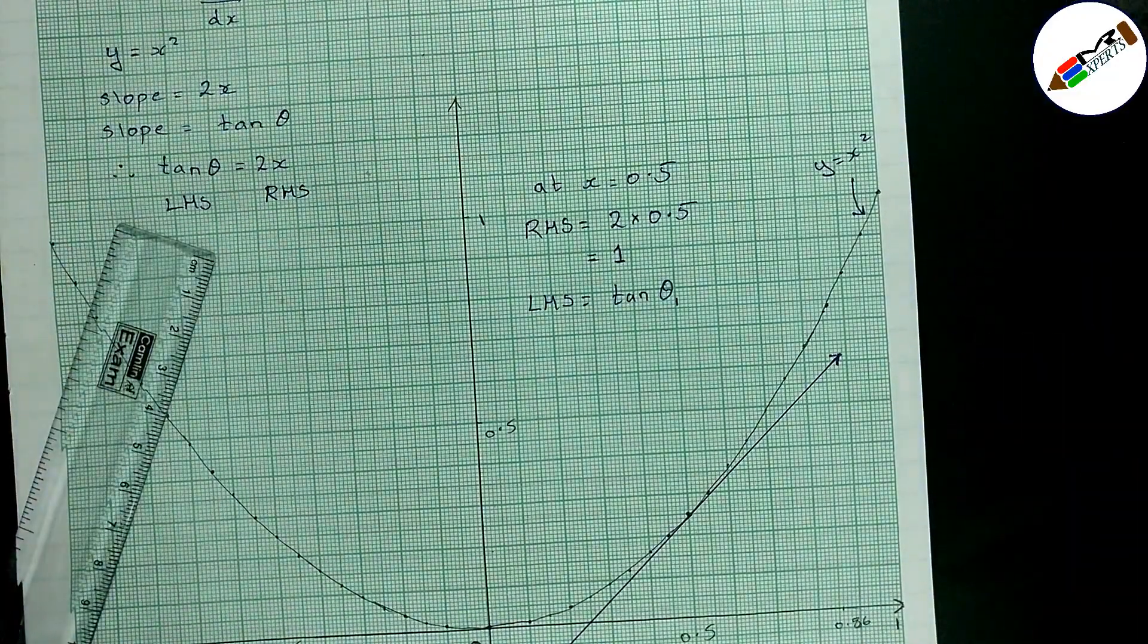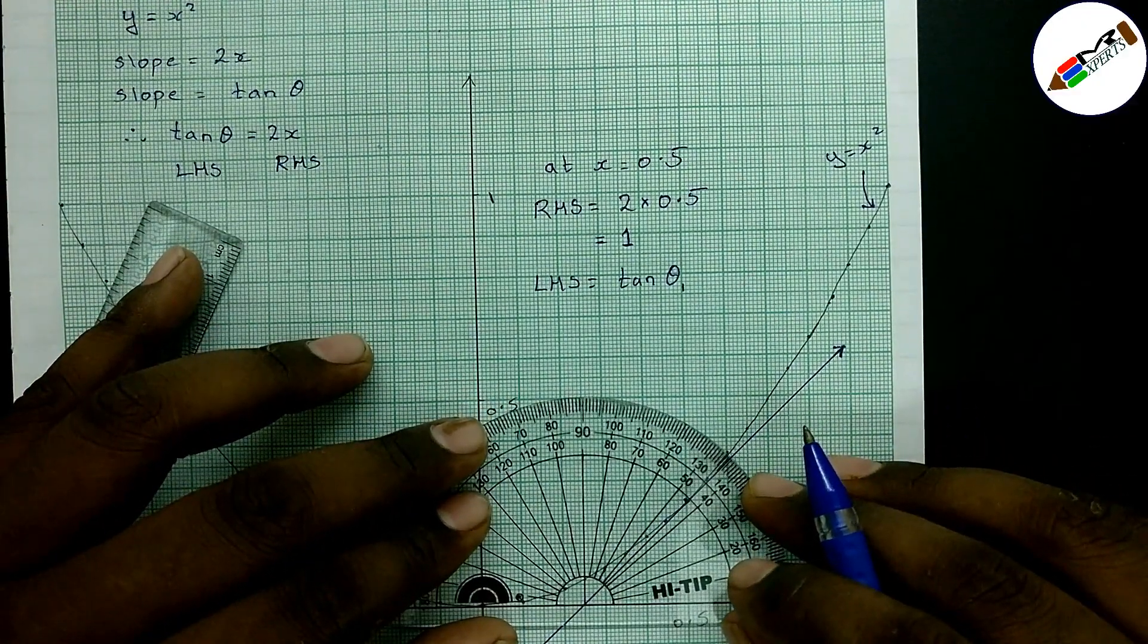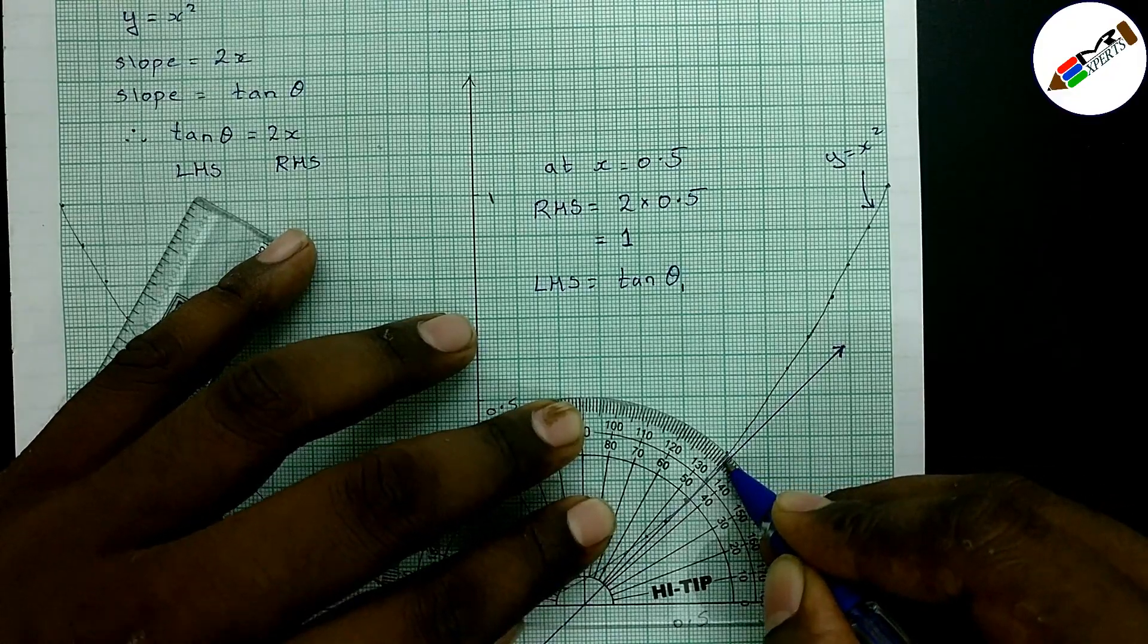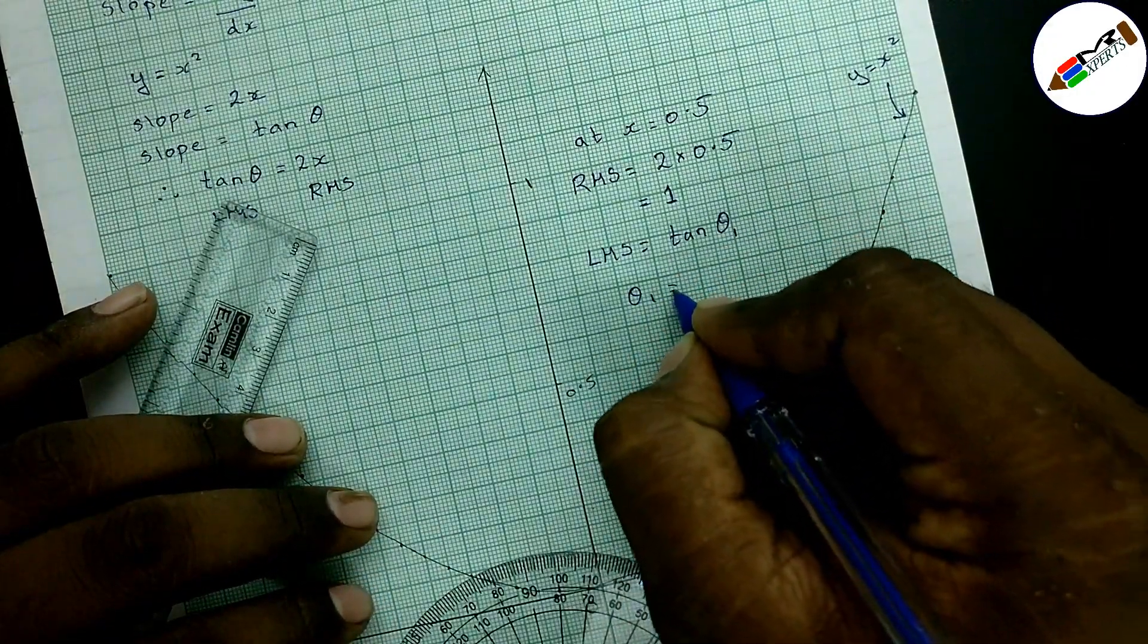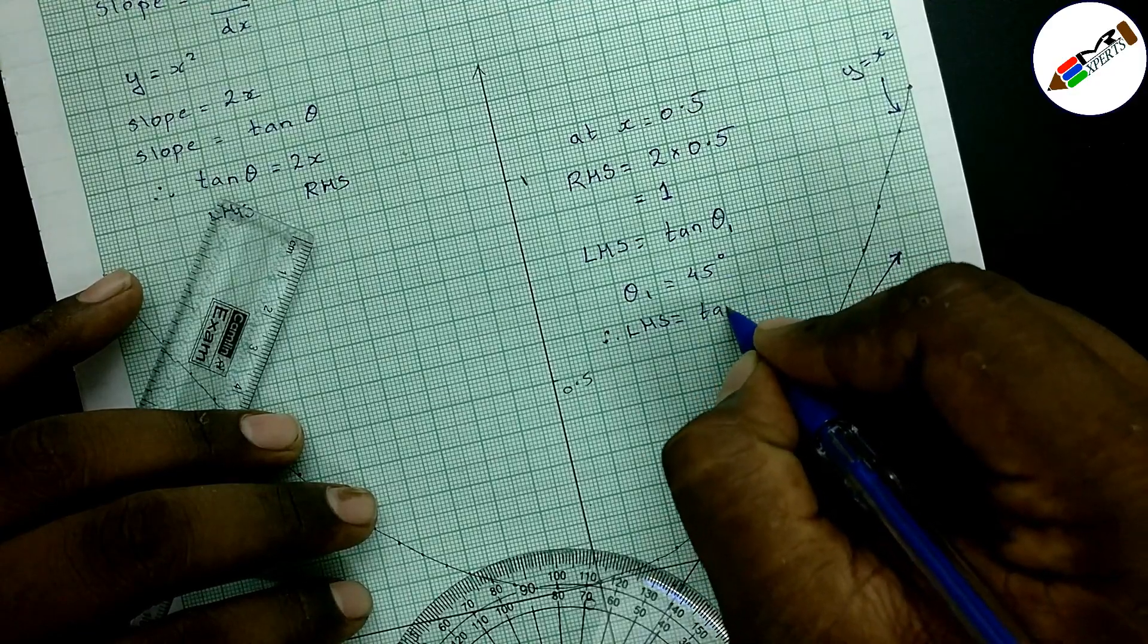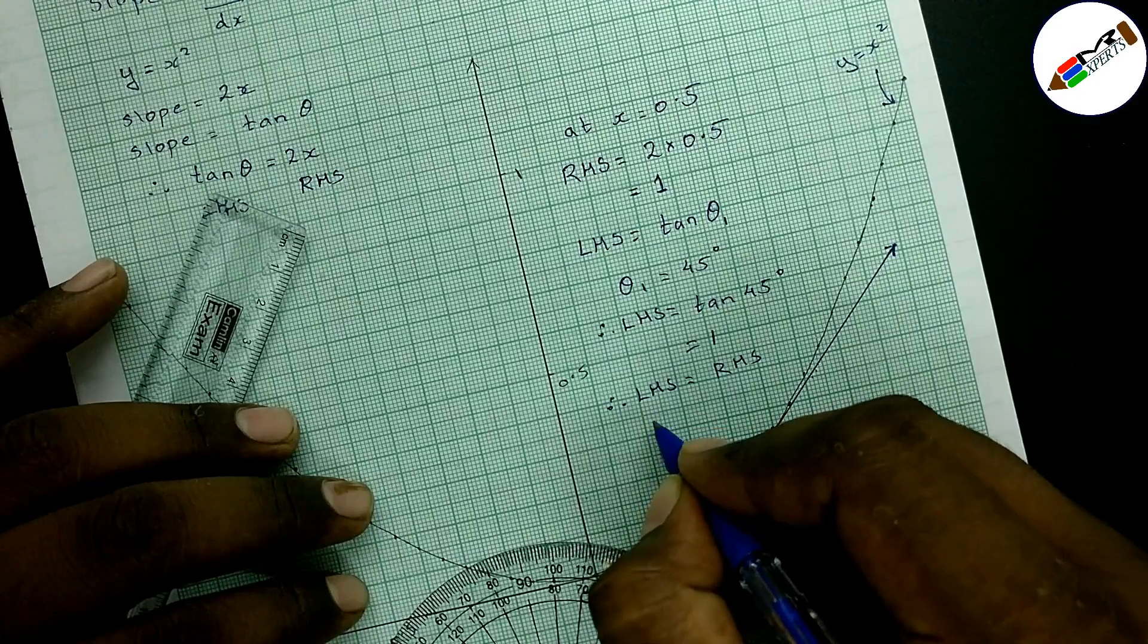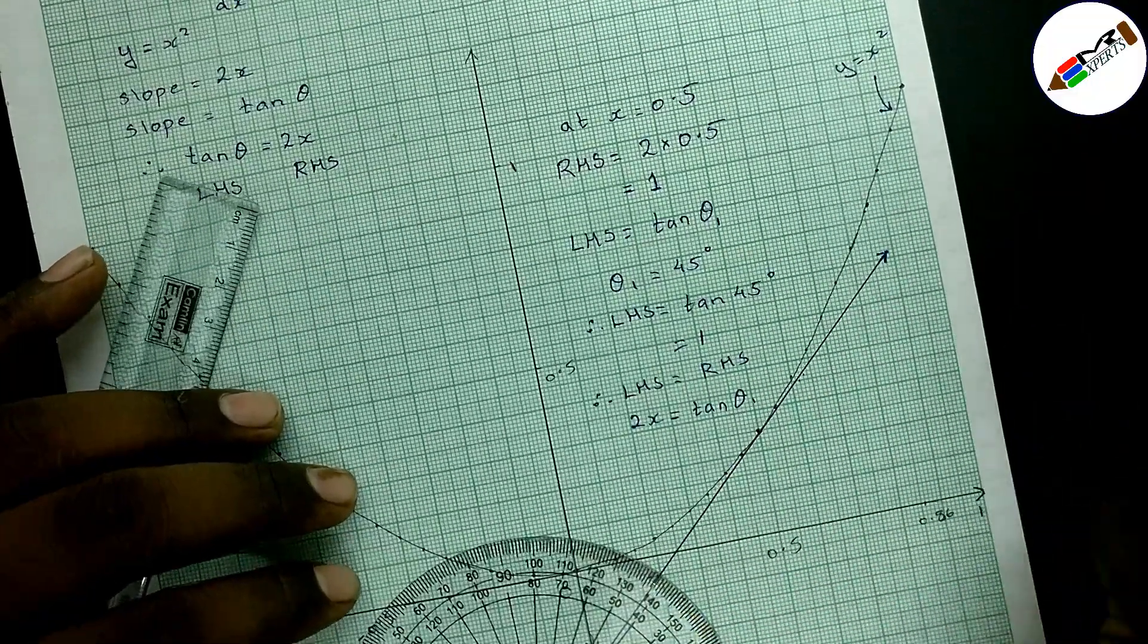The tangent is made. Now, this particular tangent at x is equal to 0.5 will make some angle with the positive direction of x axis. Let us measure that angle and call that as theta 1. As you can see it is exactly equal to 45 degrees. I can substitute in the LHS theta 1 as 45 degrees. So LHS will turn out to be tan of 45 degrees which is nothing but 1. See, we have actually proved LHS is equal to RHS that is 2x is equal to tan theta.